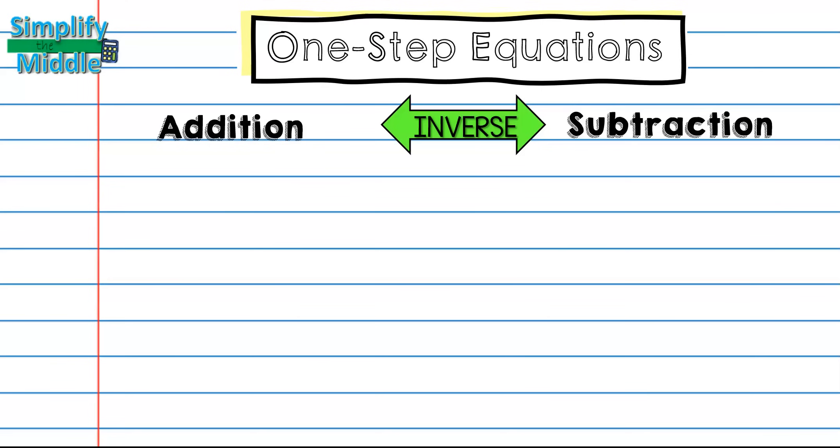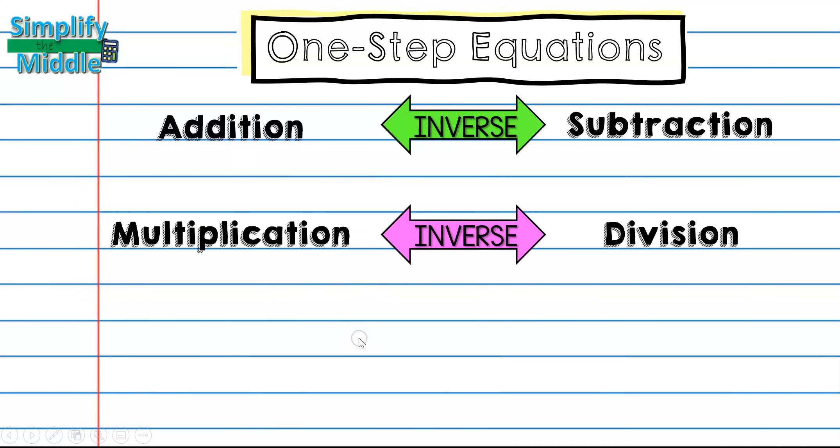In order to solve one-step equations, we must first realize that the inverse of addition is subtraction, and the inverse of subtraction is addition. So we are going to be undoing a lot of our equations using our inverses. Our inverse of multiplication is division, and our inverse of division is multiplication.